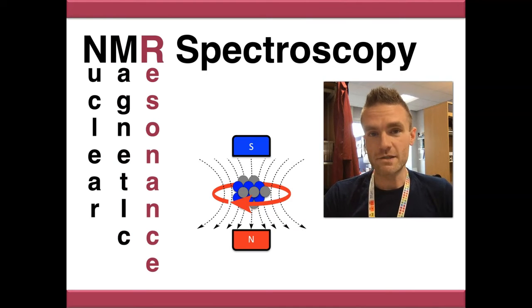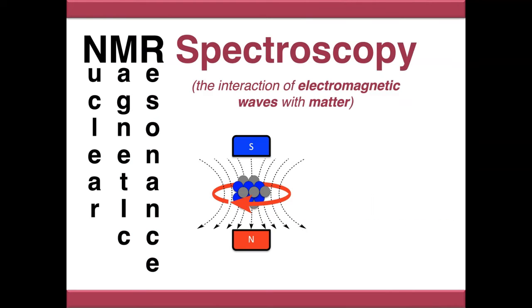The R stands for resonance and to understand resonance we need to have a look at what spectroscopy means. So spectroscopy is the interaction of electromagnetic waves with matter and in the case of NMR spectroscopy we're going to use radio frequency electromagnetic waves to interact with the nuclei in our molecules and we're going to be able to measure the response of the nuclei as a signal which is our NMR spectrum.